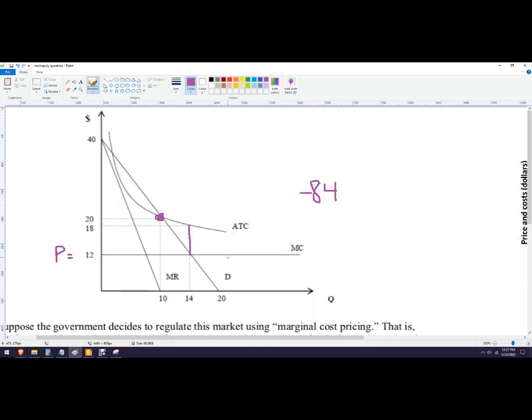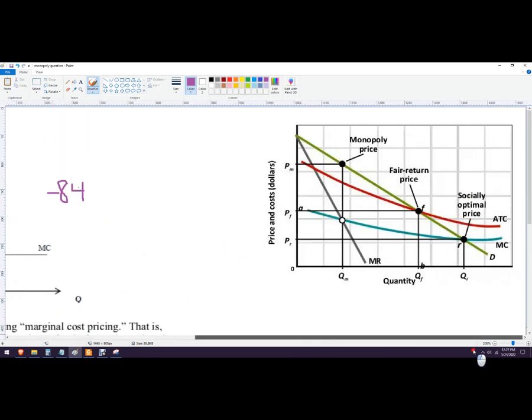So that's how to think about a natural monopoly. I'll put this graphic back over here. So here's monopoly price, here's fair return price, and there's the socially optimal price with the loss being underneath.